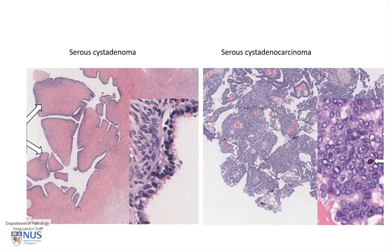Microscopically, the serous cyst adenoma again shows a lot of fibrous stroma, and we can see these columnar ciliated cells which only form a single layer. As opposed to the serous cyst adenocarcinoma with these extremely complex papillary formations — you can see very slender papillae here — and at a high magnification view, there is marked nuclear atypia as well as frequent mitotic figures, as you can see one here.